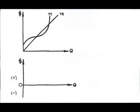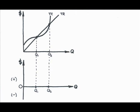For example, at output levels Q1 and Q2, what's the profit? At both of these output levels, the total revenue is exactly equal to the total cost, so the profit's 0.